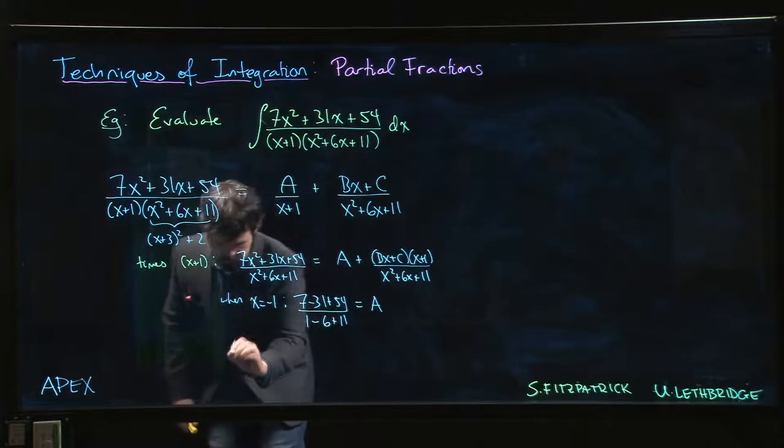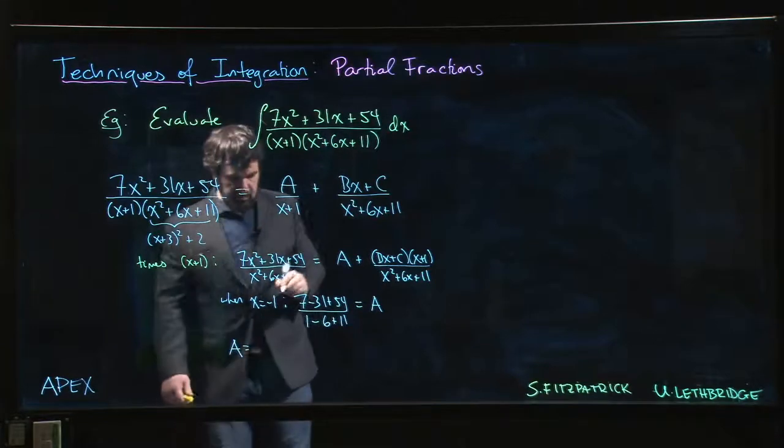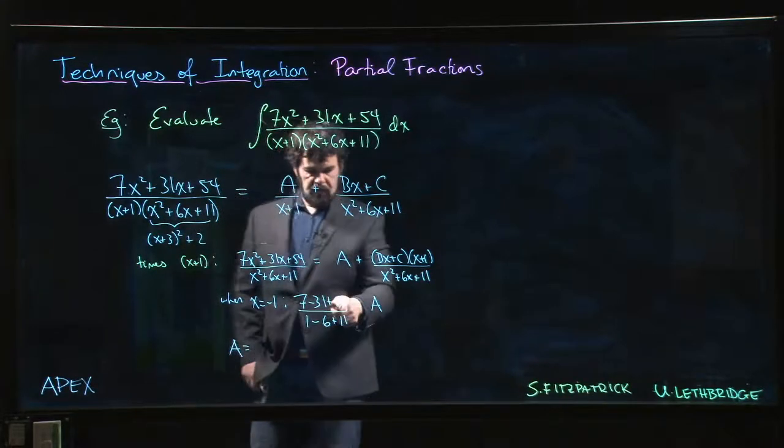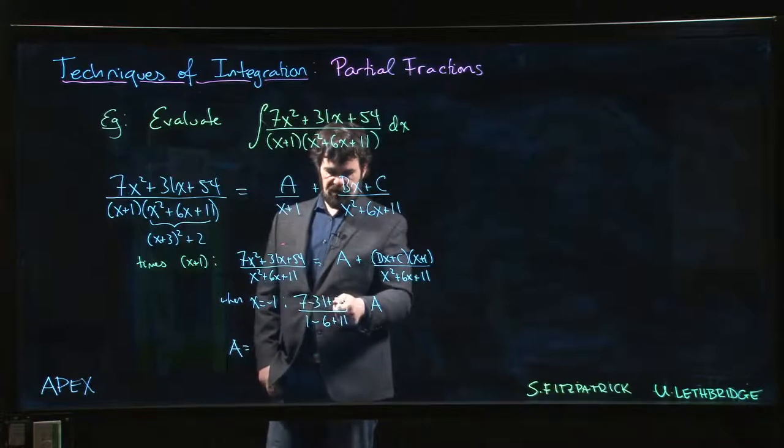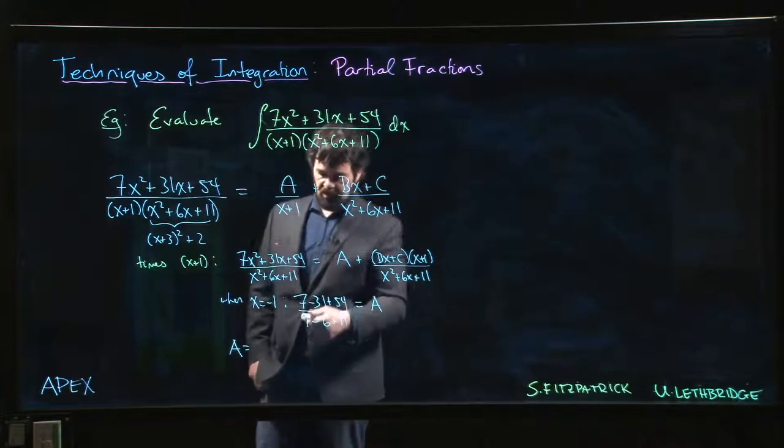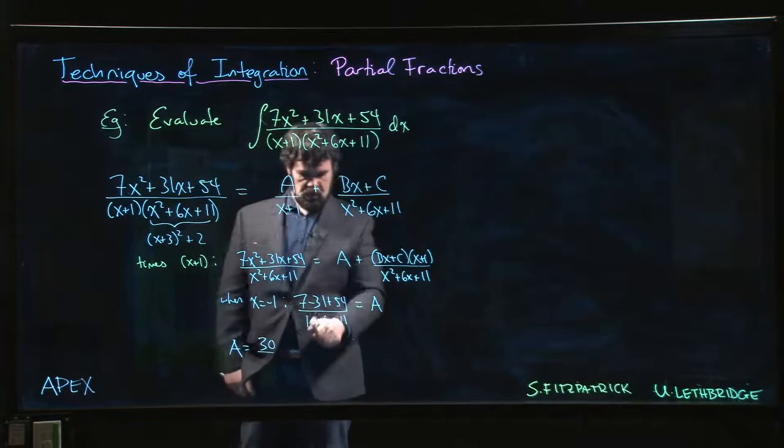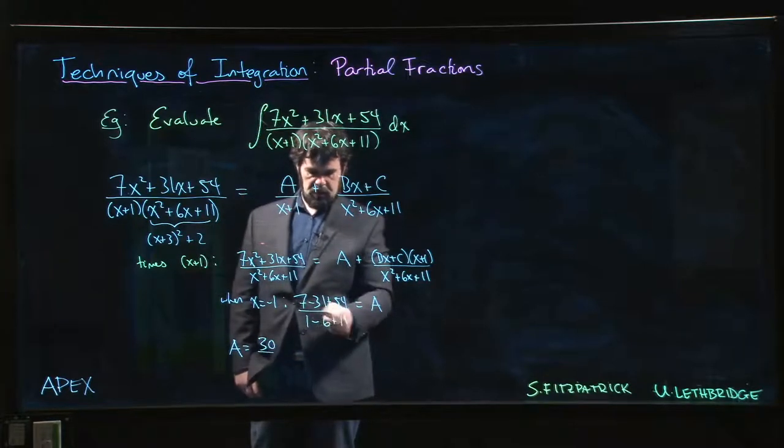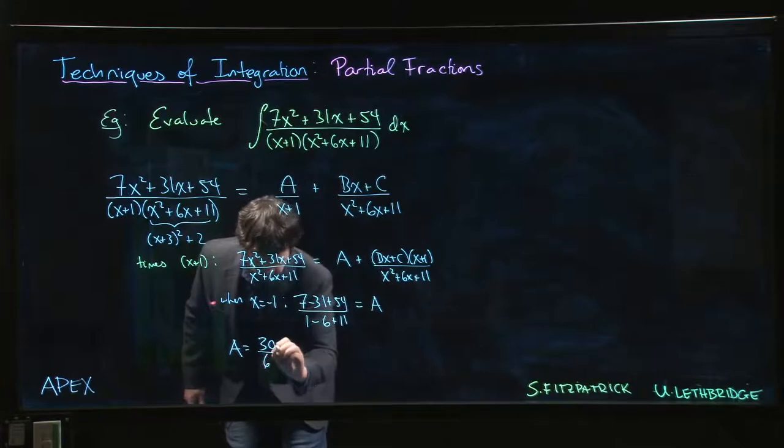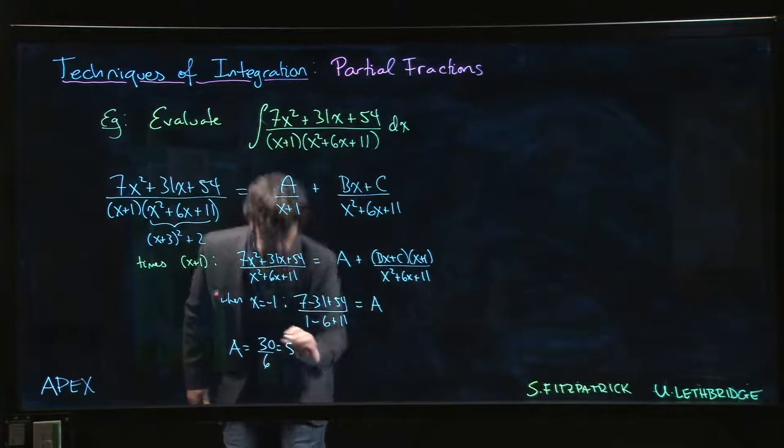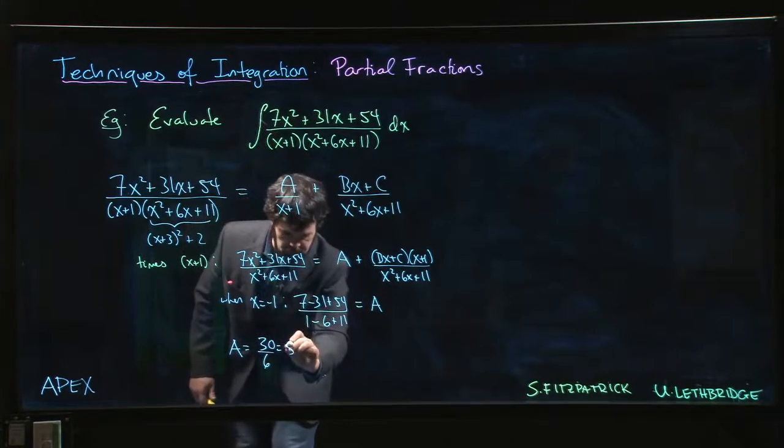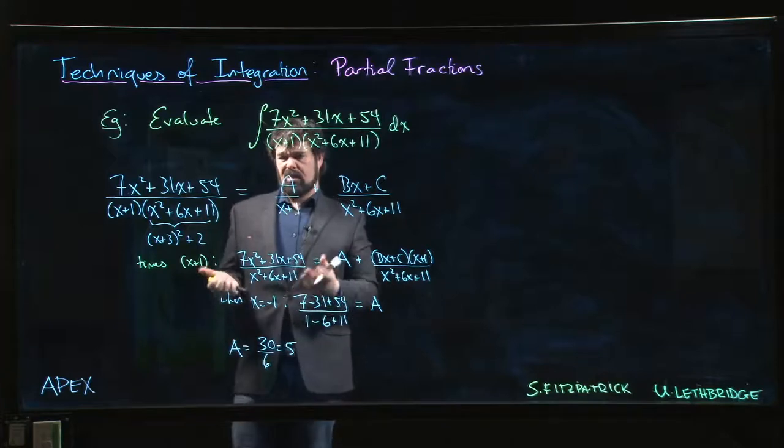So we clean that up a little bit. Let's see. 7 plus 54 is 61 minus 31. 30 over 12 minus 6, 30 over 6. So we get 5. That's not that bad.